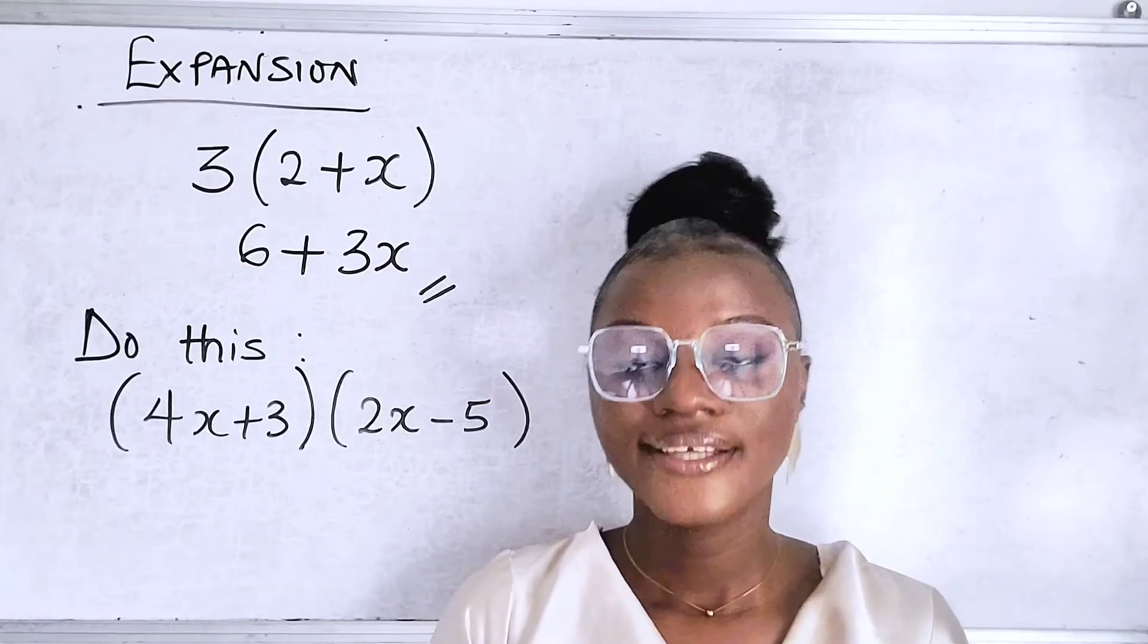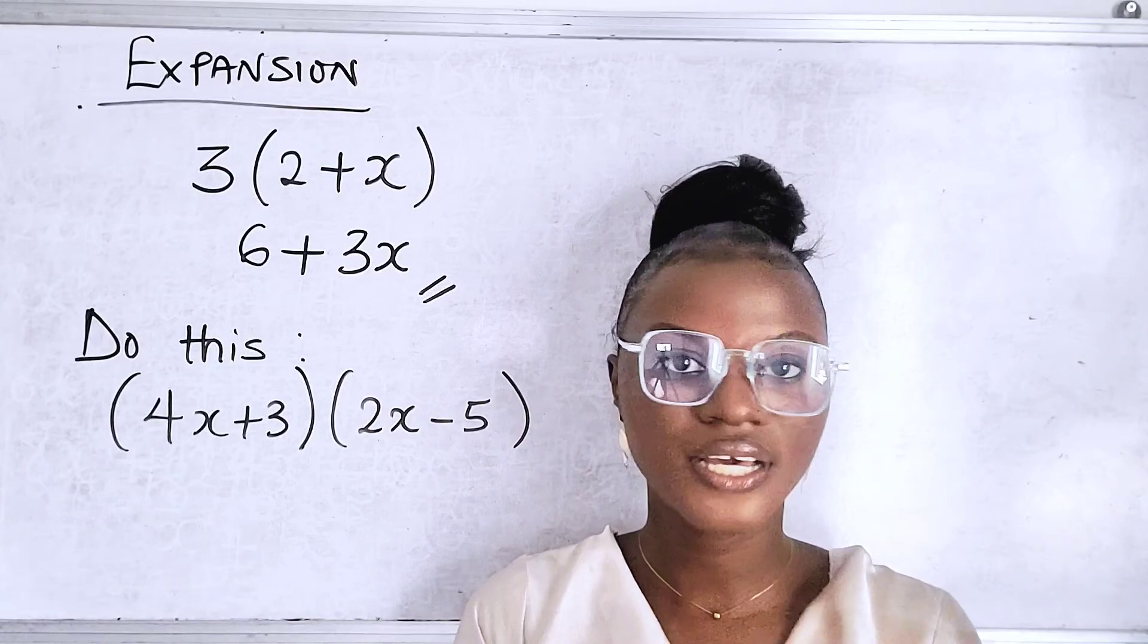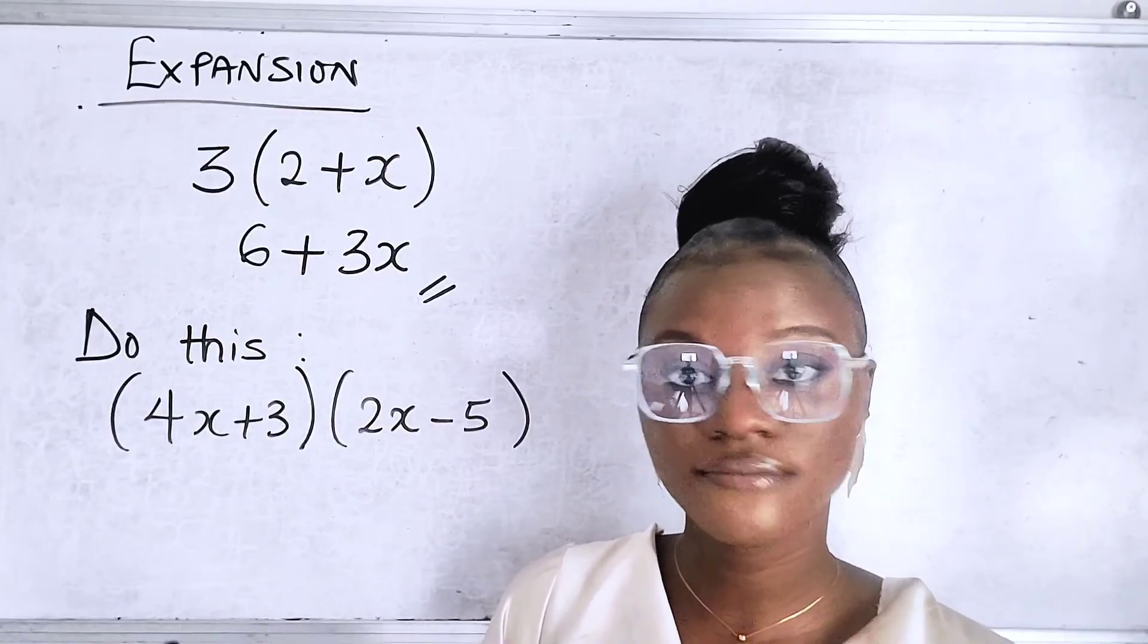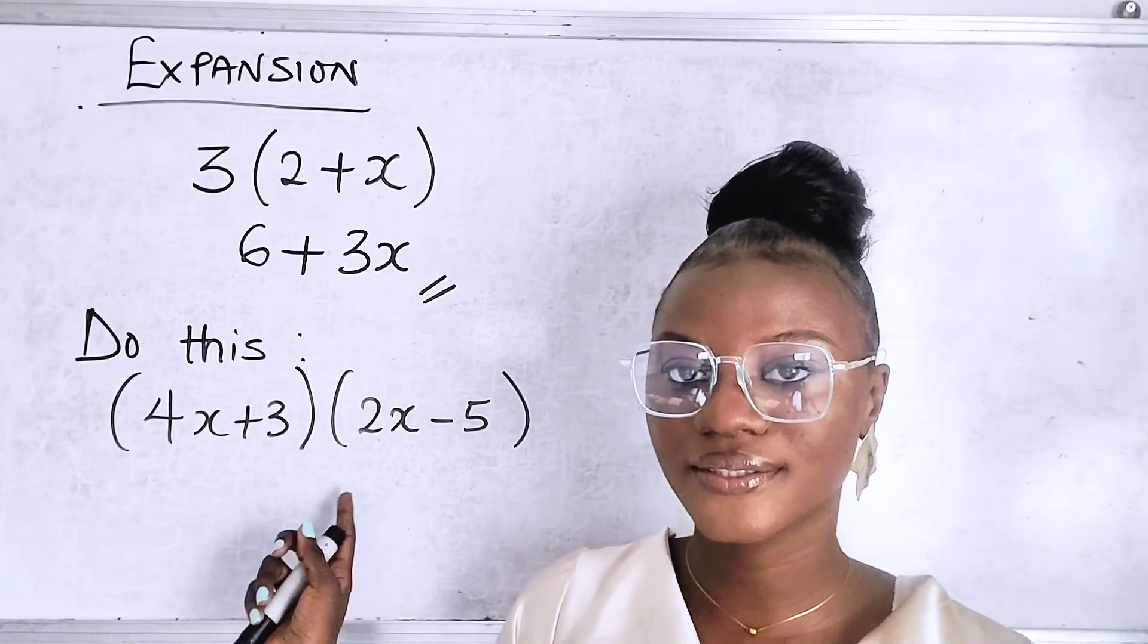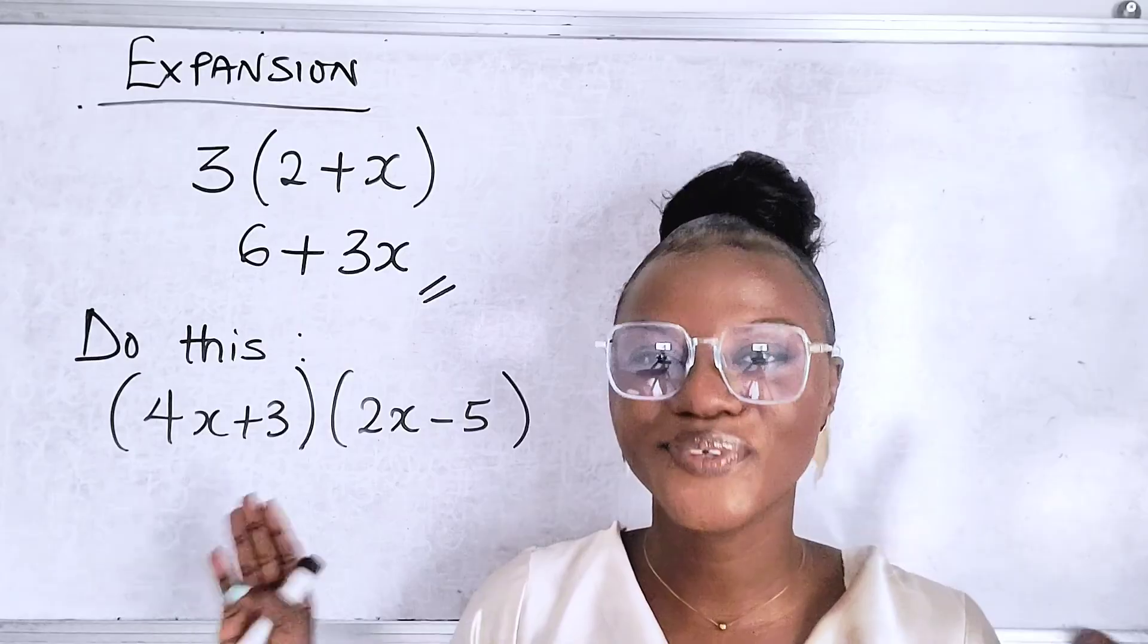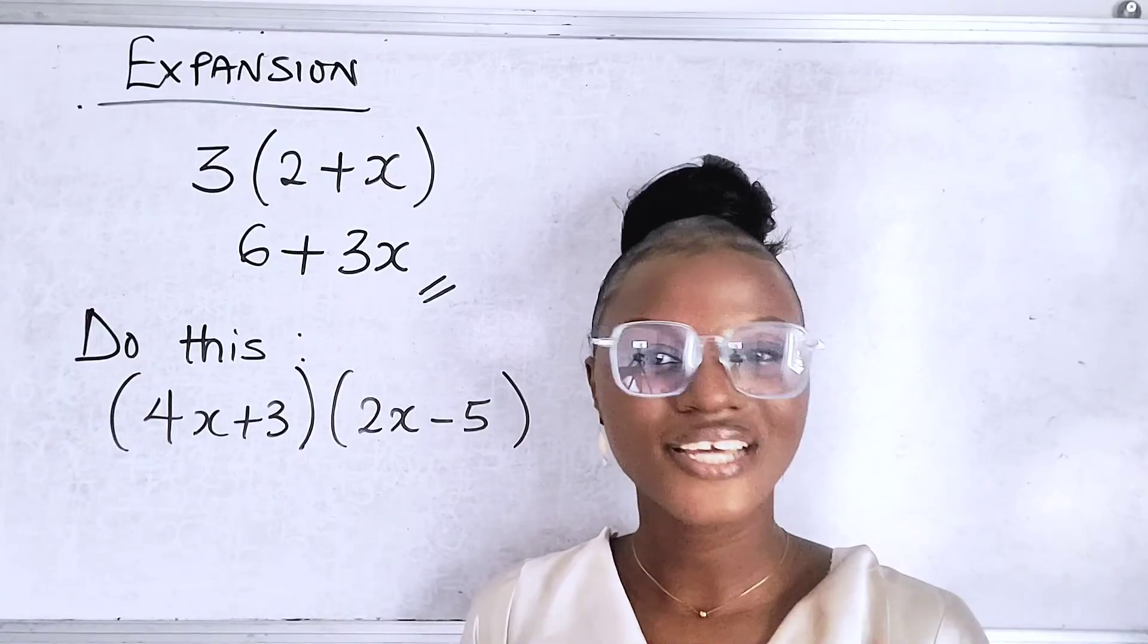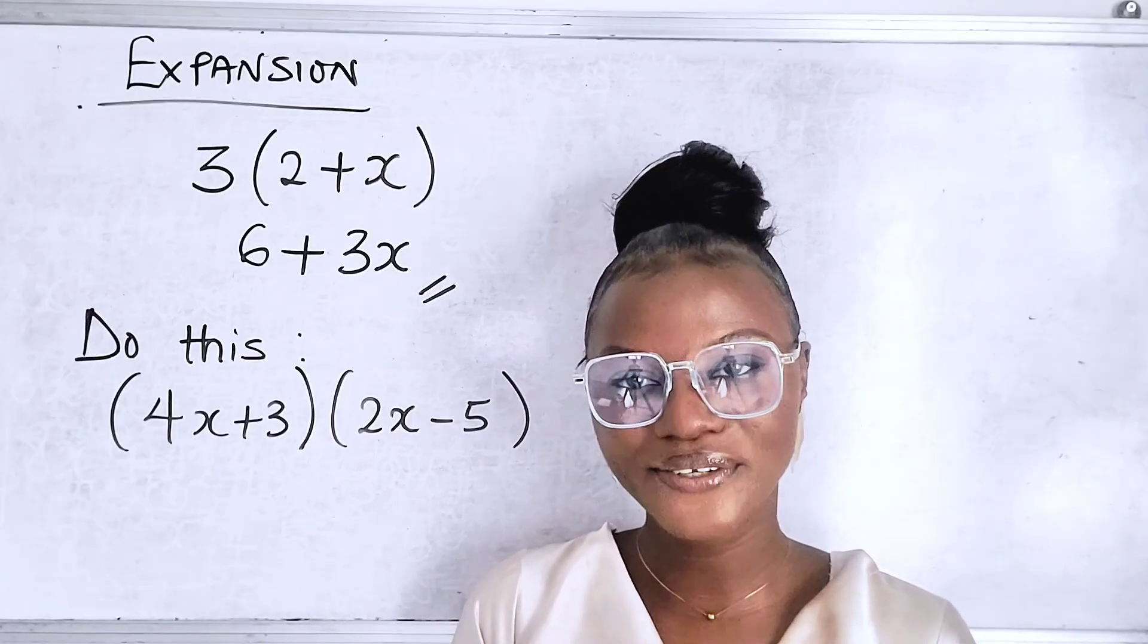So in summary, expansion is a process of distributing terms and simplifying an expression. You're given an expression and you're asked to simplify. So you just distribute, which involves parentheses, of course you can call them brackets. So we discussed that on Instagram. So if you're not following us on other social media platforms, now is the time. The links are in the description box. Do not forget to subscribe and hit the notification bell so that you can get notified whenever we upload a new video.